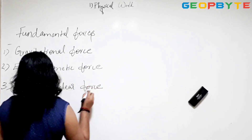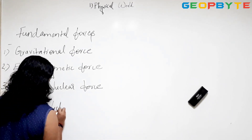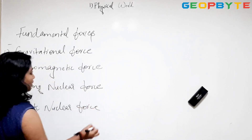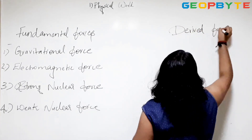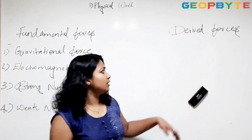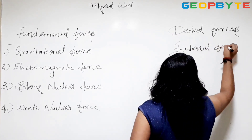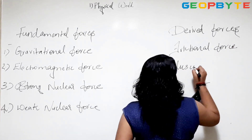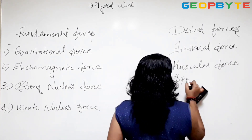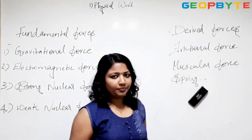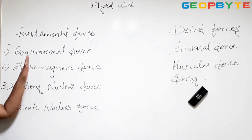There are four fundamental forces in nature. Fundamental forces are the basic forces in nature — you can't derive these forces from anything, they already exist on their own. Derived forces, on the other hand, are derived from other parameters. Examples of derived forces are frictional force, muscular force, and spring force. In this chapter we will only be focusing on the fundamental forces.